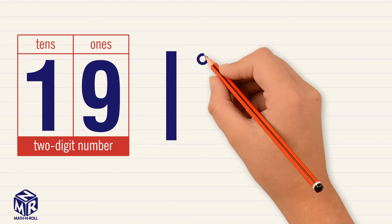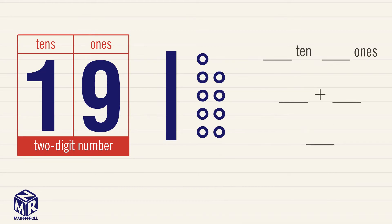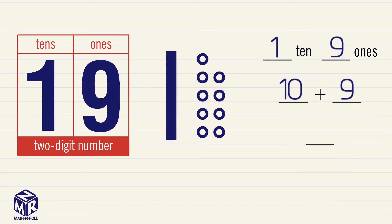Let's write 19 in three different ways. Take a look at the model. This time we have 1 bar, or 1 ten, and 9 circles, or 9 ones. So we can write 19 as 1 ten and 9 ones. We can also write 19 as 10 plus 9, or 19.